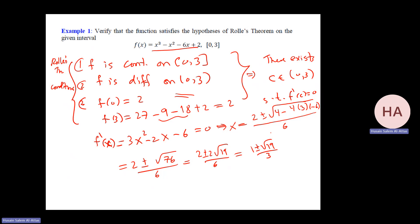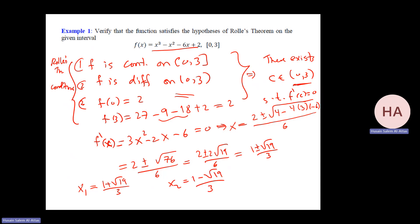To be careful, we check whether each solution is in the interval (0, 3). x₁ = (1 + √19) / 3 is approximately (1 + 4.something)/3, which is in the interval — this is c₁. x₂ = (1 − √19)/3 is negative, so it's not in the interval and is rejected. We have only one c in this case.